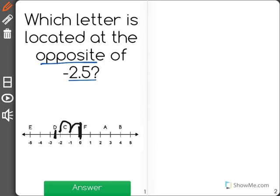So the opposite of negative 2.5 is a number that is the exact same distance from 0, but in the positive direction.